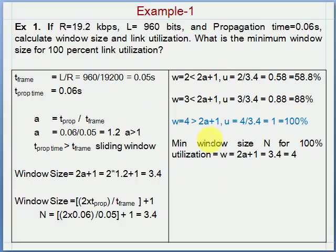Analyzing the effect of window size on utilization: if window size is 2, we get 0.58 utilization, or 58.8% efficiency. If window size is 3, we get 0.88 utilization, which is 88% efficiency. When window size is 4, this value is greater than 2A plus 1, so we get 100% utilization. Therefore, the minimum window size n for 100% utilization is 4.